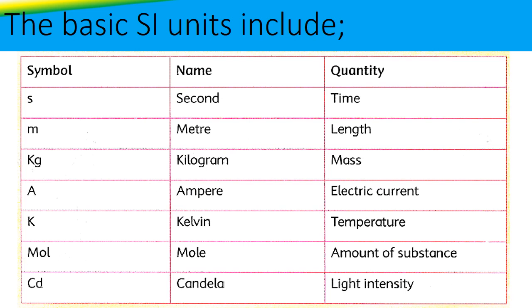A, meaning ampere, is the SI unit for electric current. K, meaning kelvin, is the SI unit for temperature. Mol, meaning mole, is the SI unit for amount of substance. Cd, meaning candela, is the SI unit for light intensity.